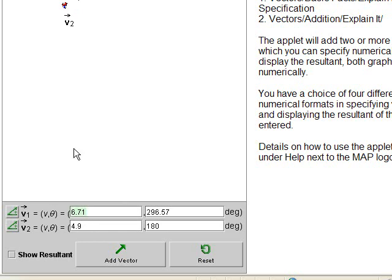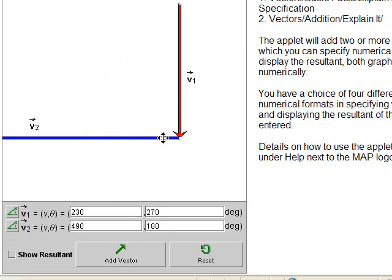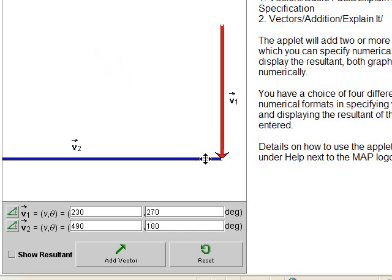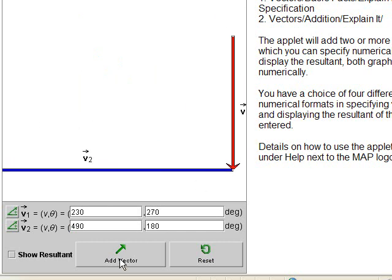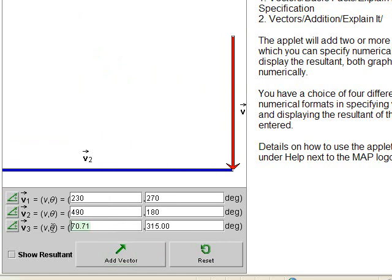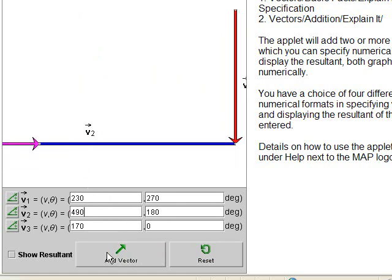So what I'm actually going to do instead is I'm going to multiply each number by 100. So I'm going to have 230 at an angle of 270 here. This looks almost like I'm using the grams. And at 490 at an angle of 180 degrees and now it looks a whole lot nicer. That one's actually pretty long. And then I need a third vector and that would be 170 at an angle of 0 degrees and that one comes straight back.